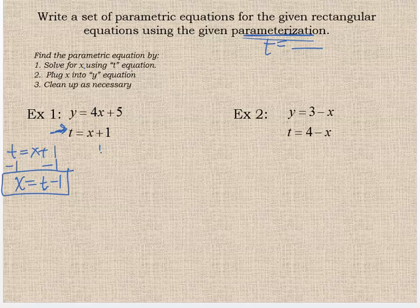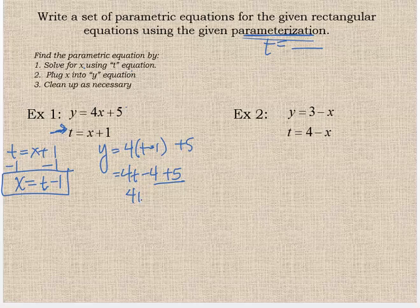Now, in order to get the y equation, I take the y equation I was given and plug this in for x. So four times t minus one plus five. And I'm going to clean it up. Distribute that four, so I have four t minus five, and then I can combine like terms here, so I have four t plus one. So y equals four t plus one, x equals t minus one. They're parametric equations now because they have t in them.